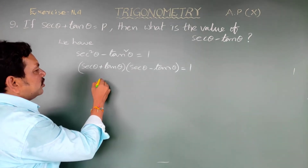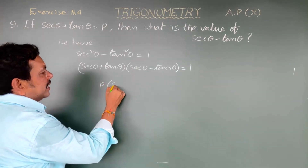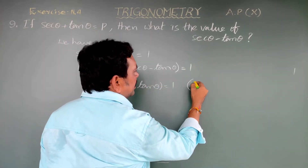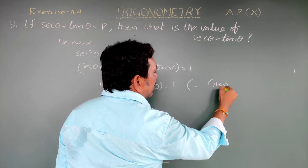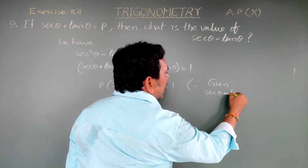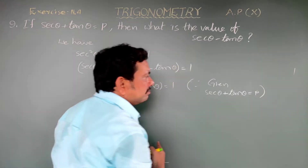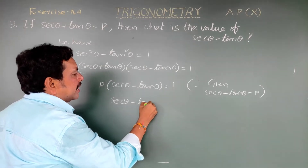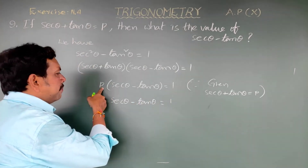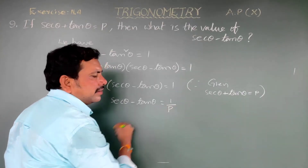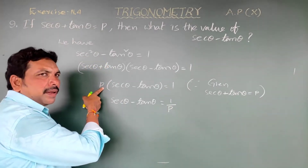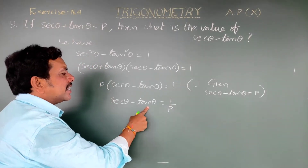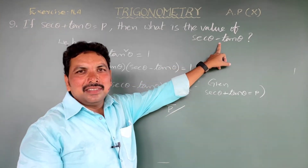He has given secant theta plus tan theta equals p. Substituting here, p into (secant theta minus tan theta) equals 1. So secant theta minus tan theta equals 1 by p, because p is multiplying on this side, so when transferred it becomes division.